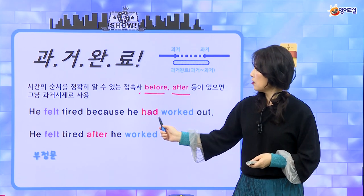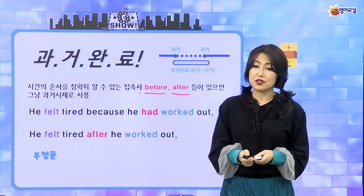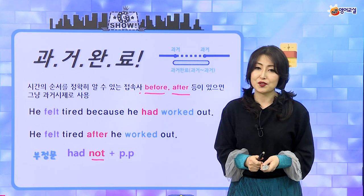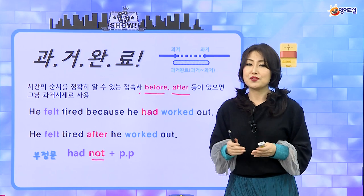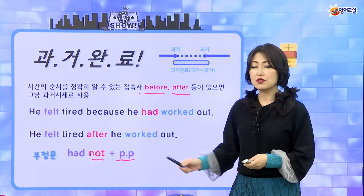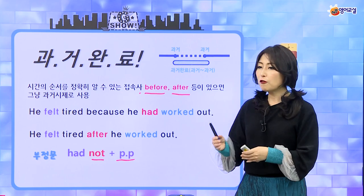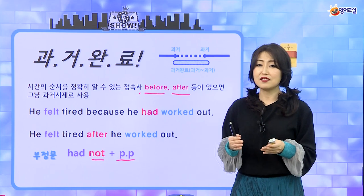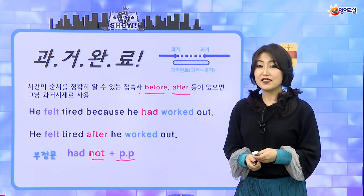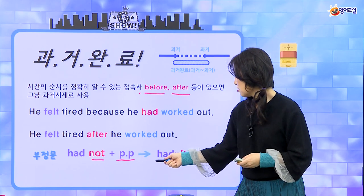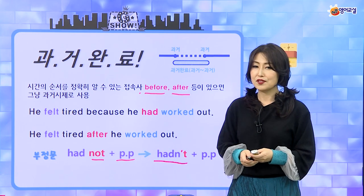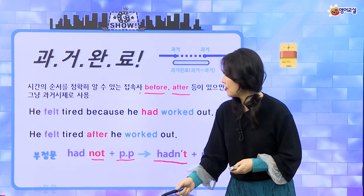과거 완료 시제도 부정문을 만들 수 있죠. had 뒤에 not만 붙이면 돼요. 현재 완료의 부정문은 have/has 뒤에 not을 붙였어요. PP는 다 똑같아요. 변하지 않는 건 항상 과거 분사가 오는 부분이에요. 부정문을 만들든 의문문을 만들든 시제를 표현하든 다 have/has/had를 가지고 하면 돼요. had not은 줄여서 hadn't라고 써요. have not은 haven't, has not은 hasn't라고 했었어요.